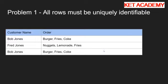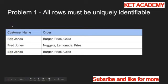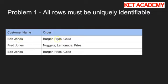Each row must be unique. We've got a table of takeaway orders here, and for each takeaway order, we've got a customer name and a customer order. For instance, Bob Jones ordered a burger, fries, and coke. Fred ordered nuggets, lemonade, and fries. And then Bob also ordered burger, fries, and coke.